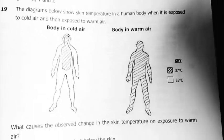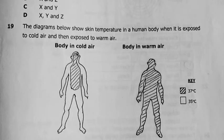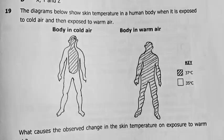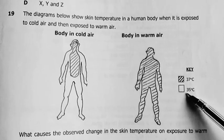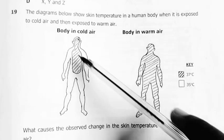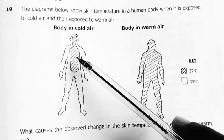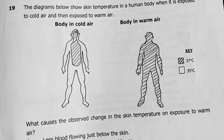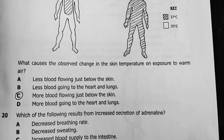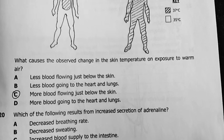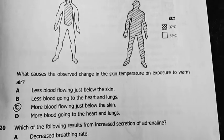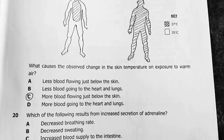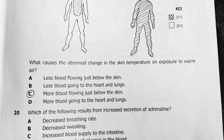Number 19. The diagrams below show skin temperature in the human body which is exposed to cold air and then exposed to warm air. So skin temperature, let's look at the key, 37, 35. When it's in cold, the other parts are actually reduced but the core temperature remains 37. When exposed to warm air, the whole body becomes warm or the temperature becomes 37. And of course, expect some sweating there and other things that follow. What causes the observation change in the skin temperature on exposure to warm air? My answer there is more blood flowing just below the skin. This is brought about by vasodilation. So the body can get rid of a lot of heat by radiation.